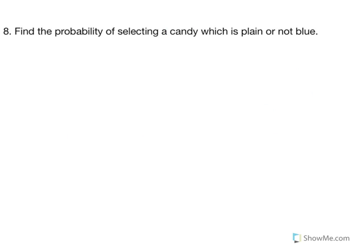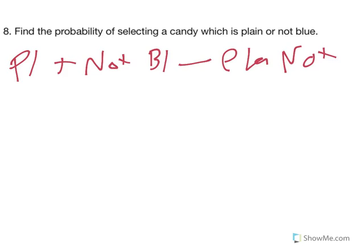And number eight, find the probability of selecting a candy which is plain or not blue. So I want plain plus not blue minus plain not blue candy. And we do have plain candies that are not blue, so that is true. Okay. Now, this one might be a little bit trickier. So the plain part is easy. Hopefully that part is easy. I need a new color. Let's go blue. Plain. Well, there are 14 plain candies. Now, the next piece is not blue.